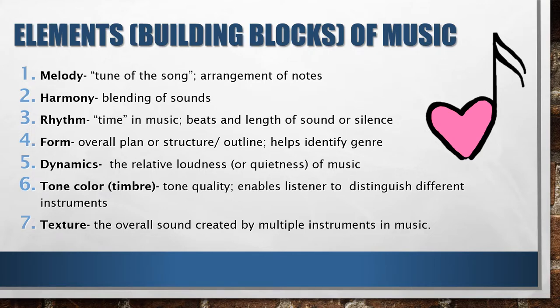Please take time to watch those two videos. Form is the overall plan or structure or outline of music. This element helps identify the genre of a piece of music. Dynamics refers to the relative loudness or quietness of music. Tone color is also called the timbre — it refers to the tone quality. This enables listeners to distinguish different instruments. For example, the tone color of an acoustic guitar differs from an electric one. The timbre allows us to determine the type of guitar.